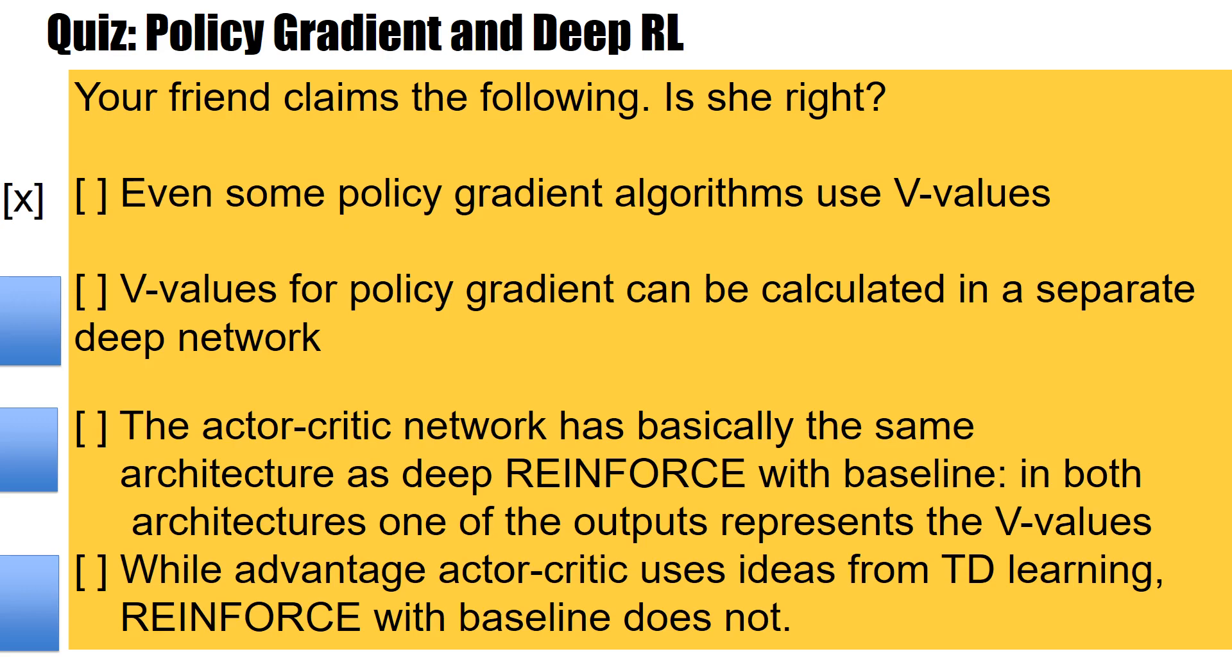V-values for policy gradient can be calculated in a separate deep network. And yes, this is correct. We can have two separate networks. They may share a couple of layers. They don't have to. It's two different types of outputs, one for the actions and the second one for the V-value.